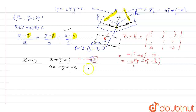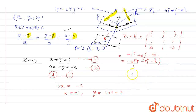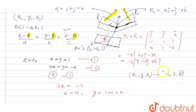Now assume these are equations 1 and 2. Doing equation 2 minus equation 1, we get 3x equals minus 3, so x equals minus 1. Substituting back, y equals 1 plus 1, which equals 2. So the point (x1, y1, z1) on the line is (minus 1, 2, 0).